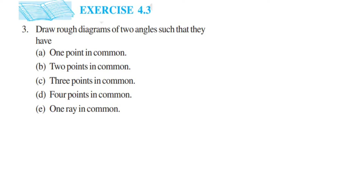Hey everyone, here is a question from exercise 4.3, third question. This is the last question from the chapter Basic Geometrical Ideas. In this question they are asking us to draw a rough diagram of two angles such that they have certain conditions.